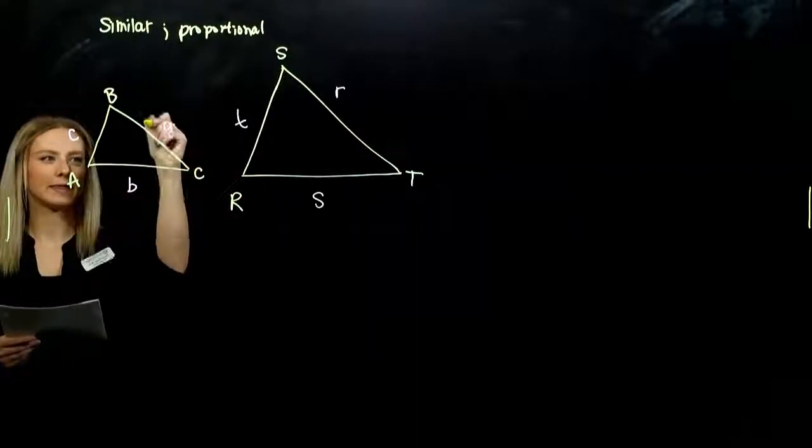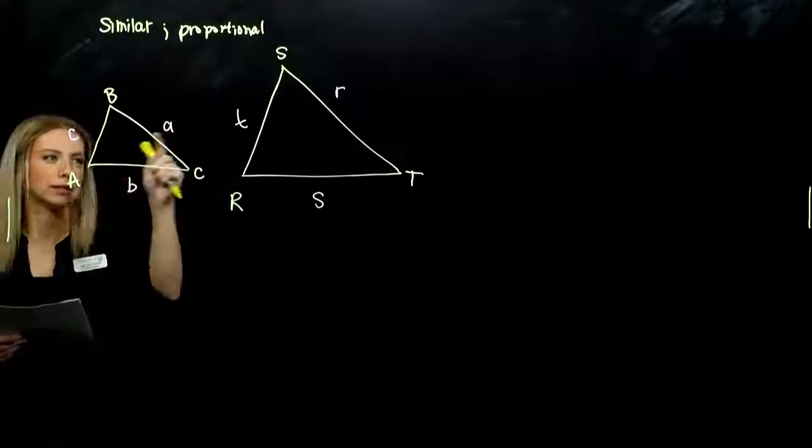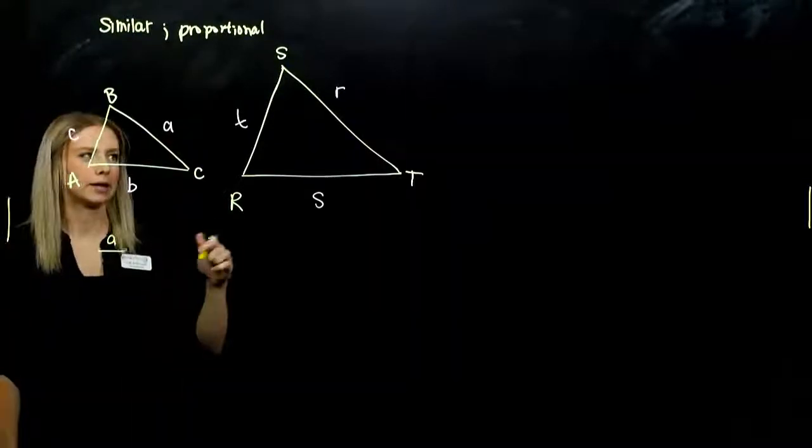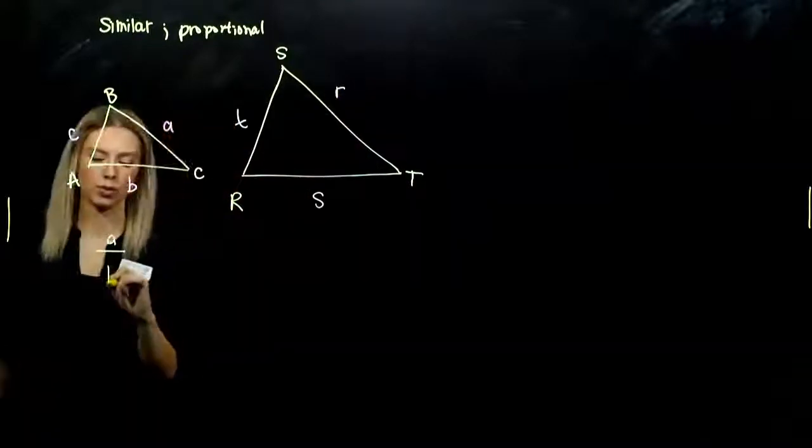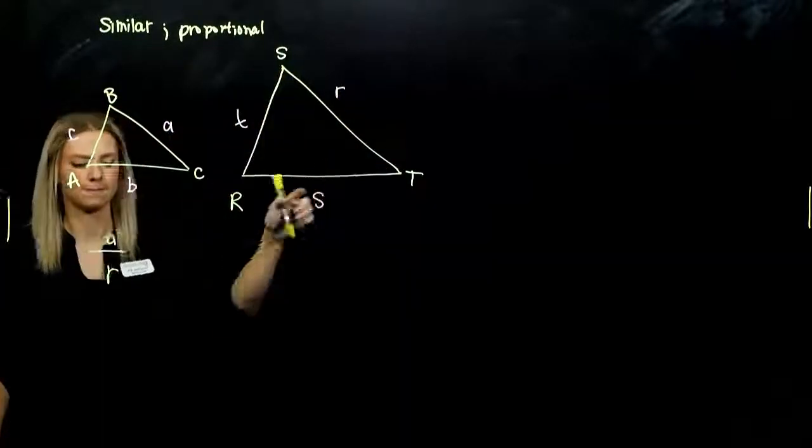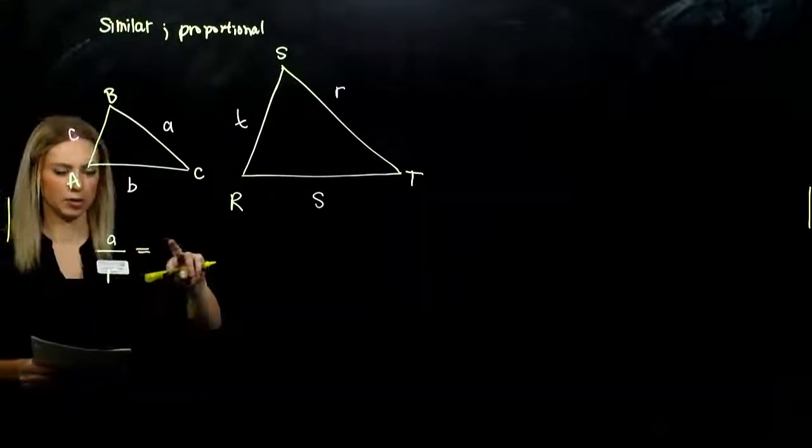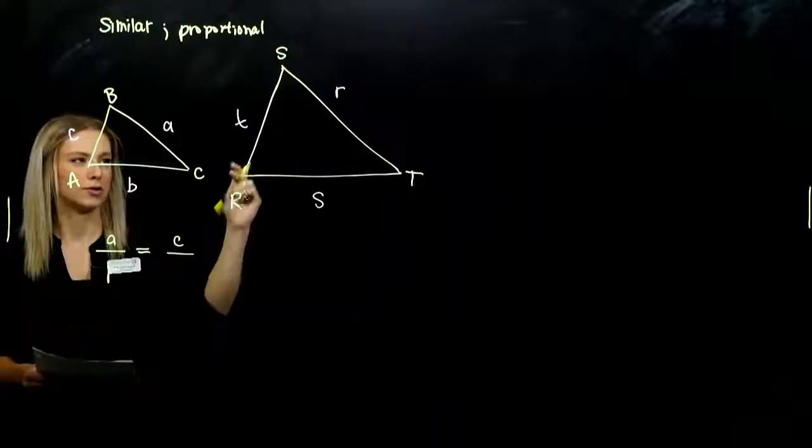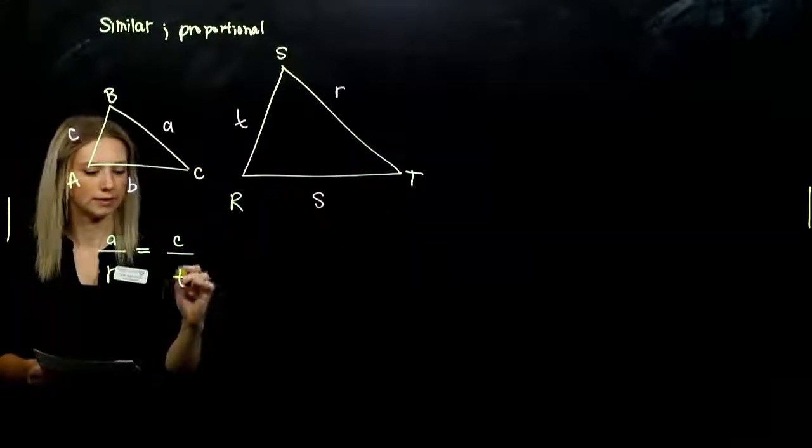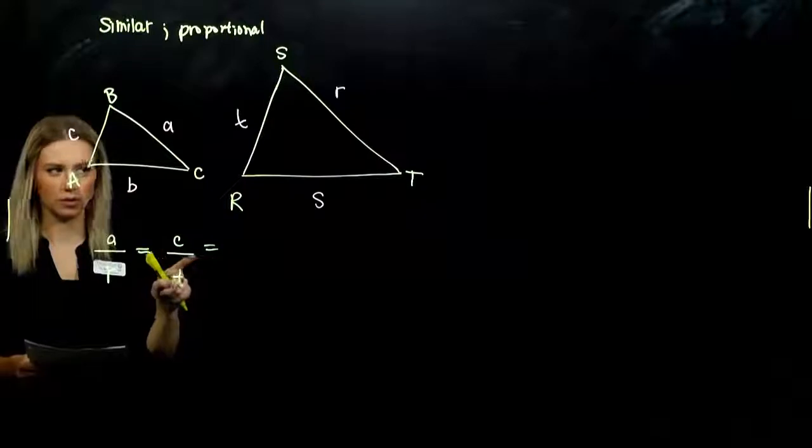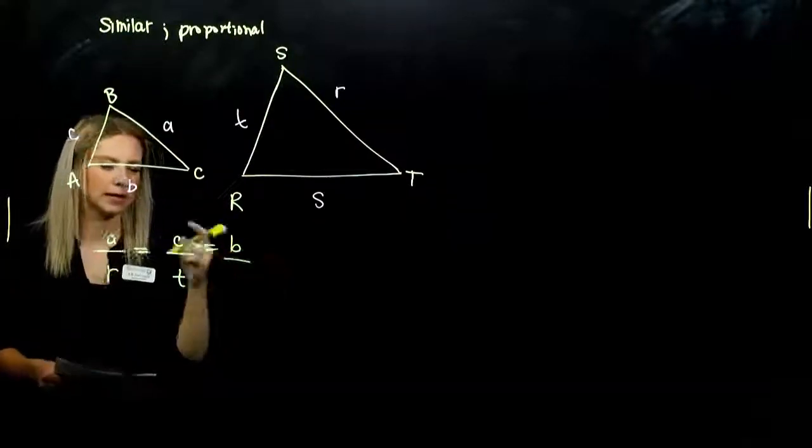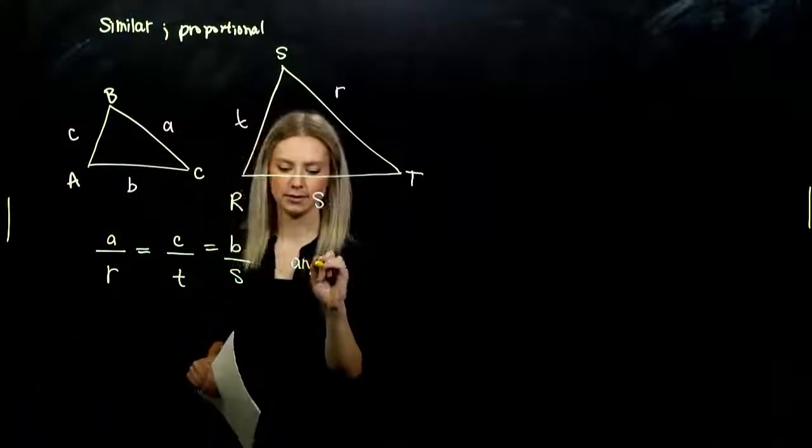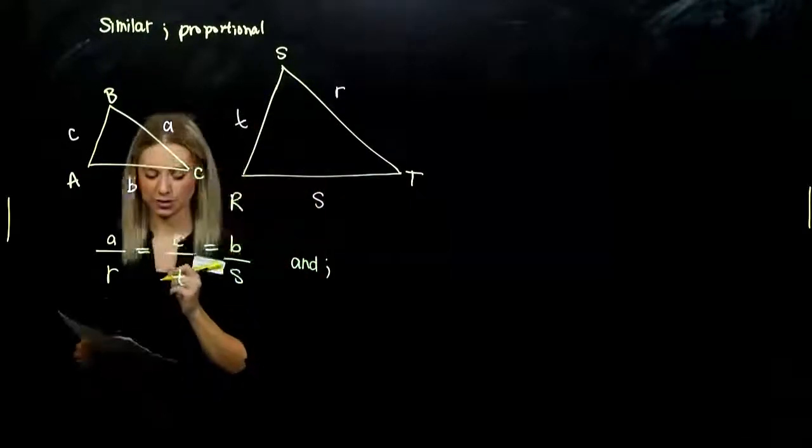If I'm looking at the side lengths, they're represented by the lowercase letters. What relationship do we have? A in my smaller triangle is related to R in my larger one. It's proportional to this side. Everything is proportionate, so the proportion is all equal. Side length C is proportional to little t of my larger triangle. And side length B is in proportion to side length S. And the other part that we discussed, the angle measures are the same.